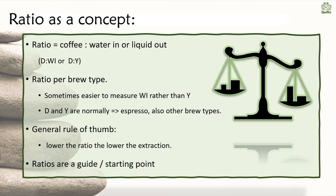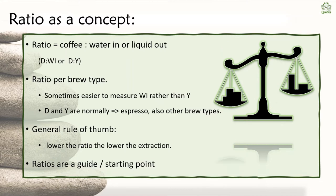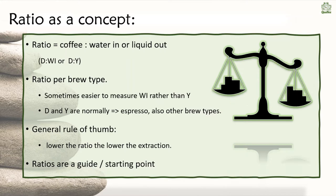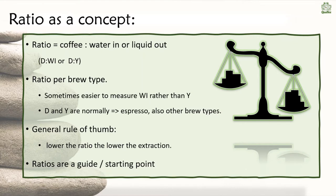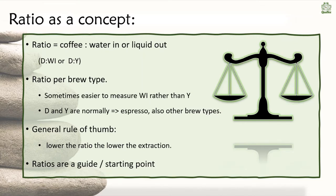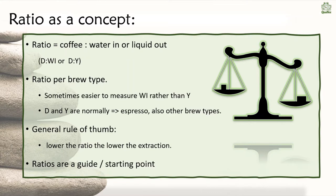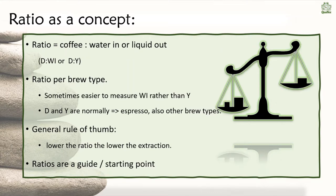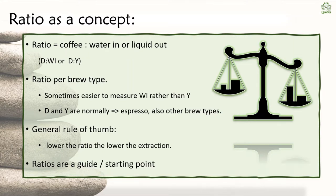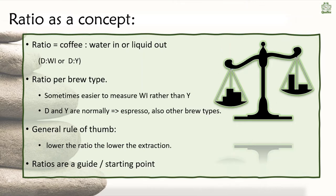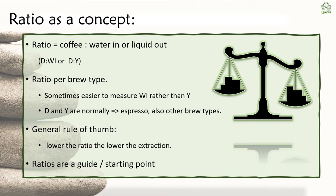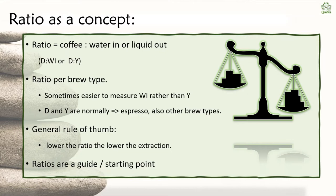A general rule of thumb for these ratios is: the lower the ratio, the lower the extraction. Or, as we might link back to later, the lower the extraction, the more likely it is that we're going to have sourness in the coffee. Just remember, as I've said, ratio is a guide, a starting point. You can watch the video by James Hoffmann who has a rant about ratios.